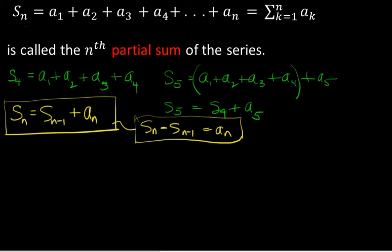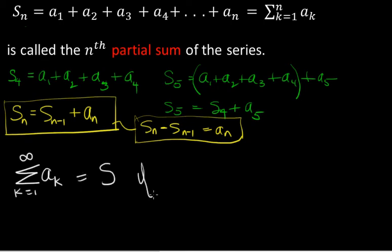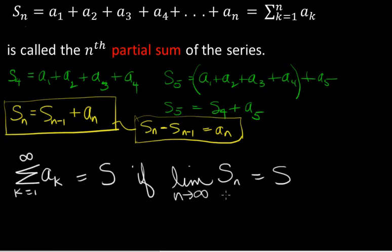The sum of the A sub k's from k equals 1 to infinity equals S if the limit as n goes to infinity of S_n equals S. So if the limit of the sequence of partial sums exists, then that number — that limit — is what we call the sum of the series. Remember, it's not really a sum; it's a limit of a sequence. We say the series converges to S, and sometimes we say the sum of the series is S, meaning the limit of the sequence of partial sums exists and equals S.